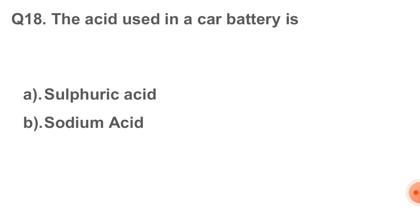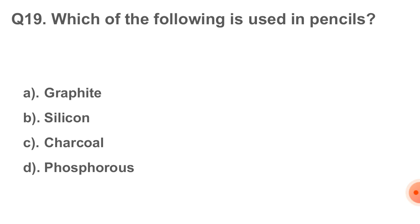Next question: the acid used in a car battery is. Option number A, that is sulfuric acid. Next question: which of the following is used in pencils? The correct answer is option number A, that is graphite.